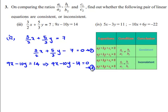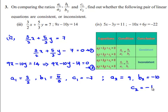If we compare the first and second equations with the standard equations a1x + b1y + c1 = 0 and a2x + b2y + c2 = 0, we get a1 = 3/2, b1 = 5/3, c1 = -7, and a2 = 9, b2 = -10, and c2 = -14.